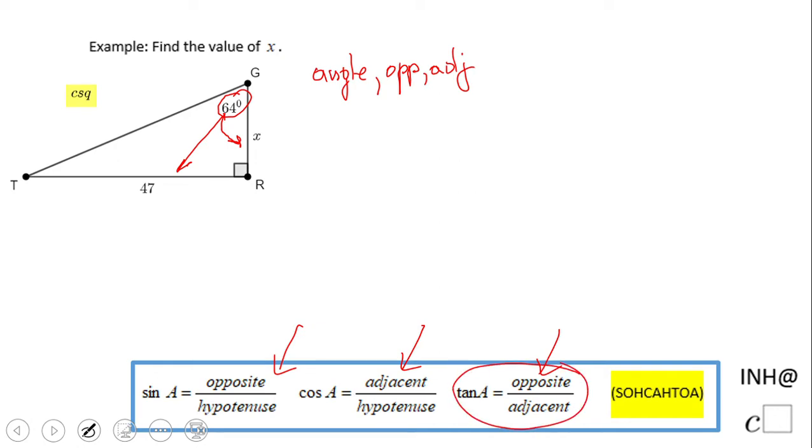Tangent. So we're going to have tangent of 64 equals opposite, right? That would be 47 over adjacent, which is x.